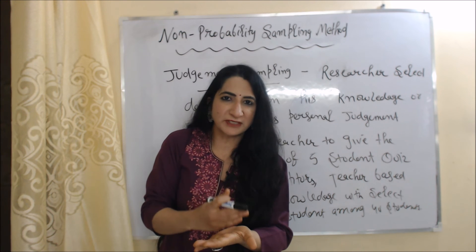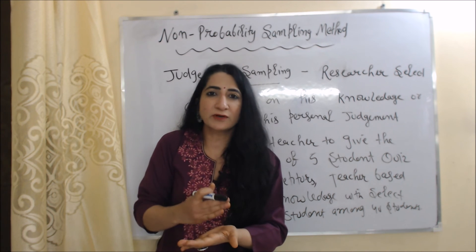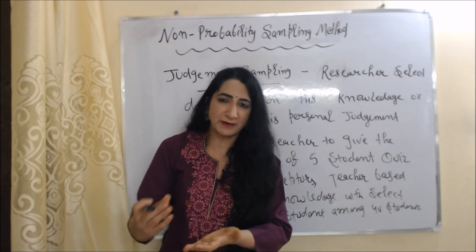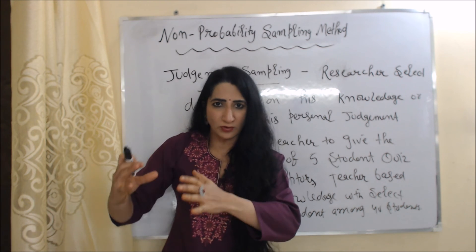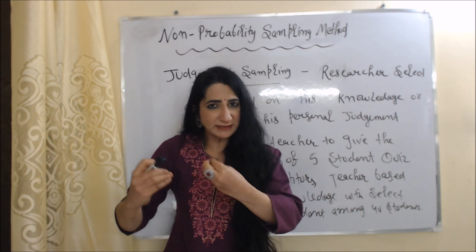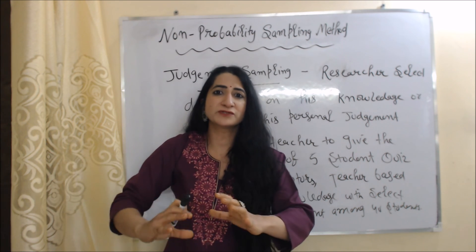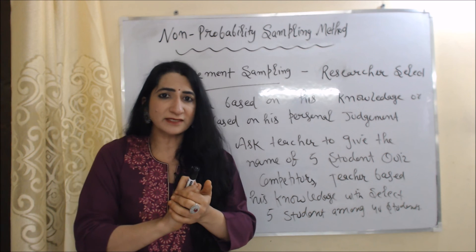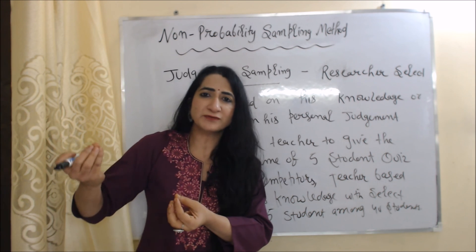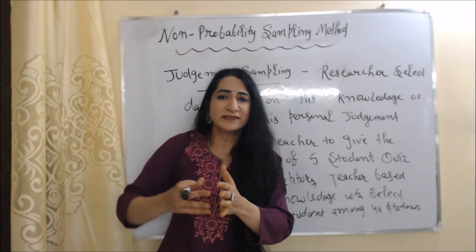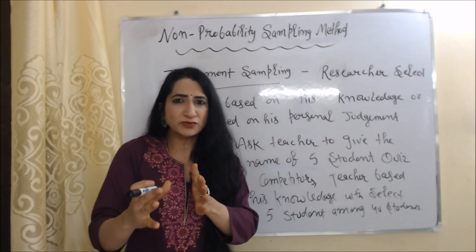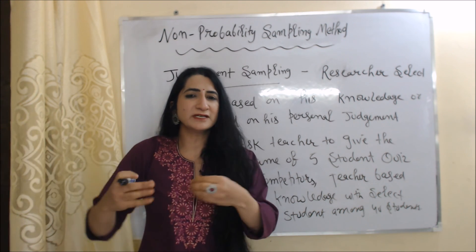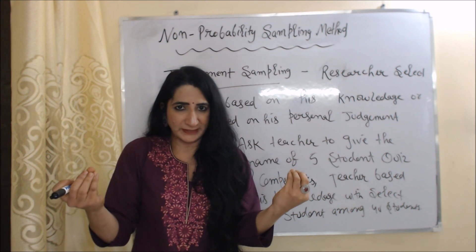The last method of non-probability sampling is judgment sampling. In judgment sampling, the researcher collects samples based on his knowledge or personal judgment. For example, you go to a teacher and ask him to give the names of five students for a quiz competition. The teacher, based on his knowledge, selects five students out of forty who he thinks are most suitable for the competition.